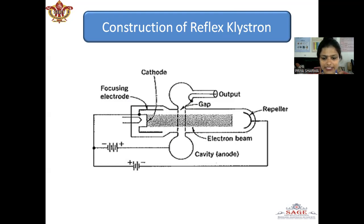The electron beam is accelerated towards the anode cavity. After passing the gap in the cavity, electrons travel towards a repeller.